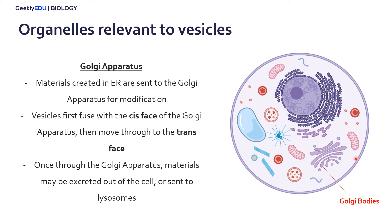The vesicles come from the ER and then move into the Golgi apparatus, shown here. It first forms at what's called the cis face, which is the face closer to the nucleus. Then it moves through the Golgi apparatus to the trans face, which faces the outside of the cell. From there, it will go to another vesicle aimed to either go outside the cell or to vesicles such as lysosomes.